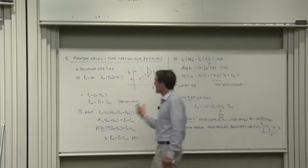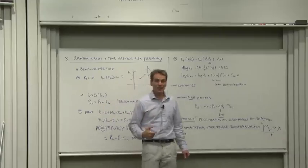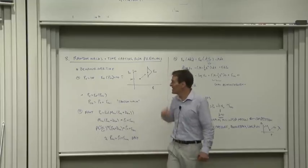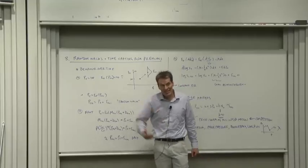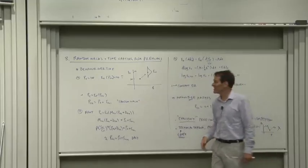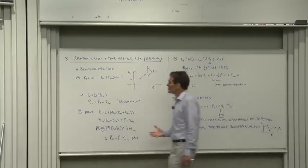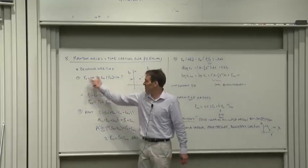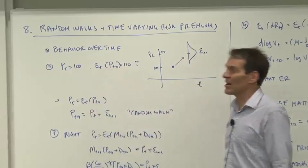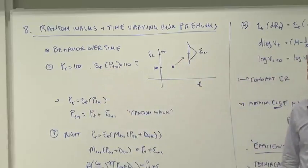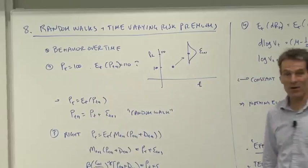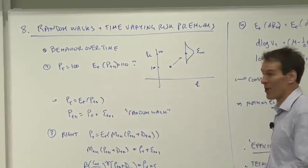Here we're thinking about the behavior of assets over time. So far I've been thinking about why one asset earns more returns on average than another. Now let's think about assets' behavior over time. Suppose we're sitting around and the stock market's at 100, but everybody thinks it's going to be at 110 tomorrow. What do you do? Answer: buy. And you better be quicker about it than that if you want to make money in today's markets.